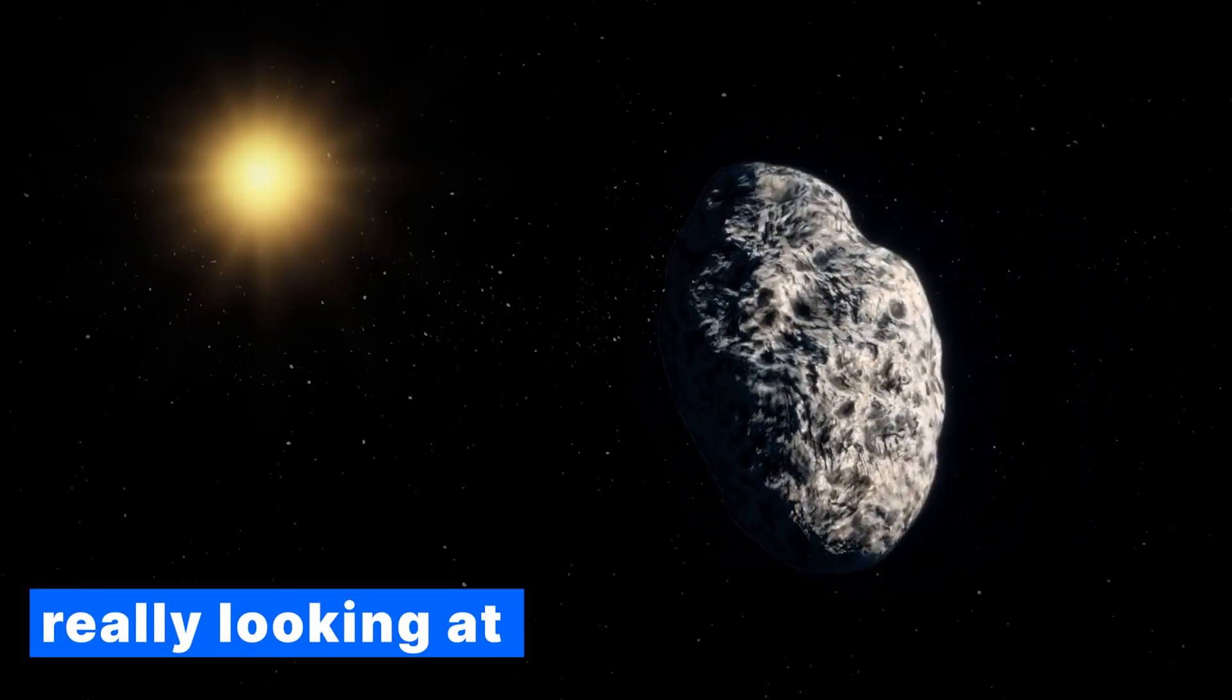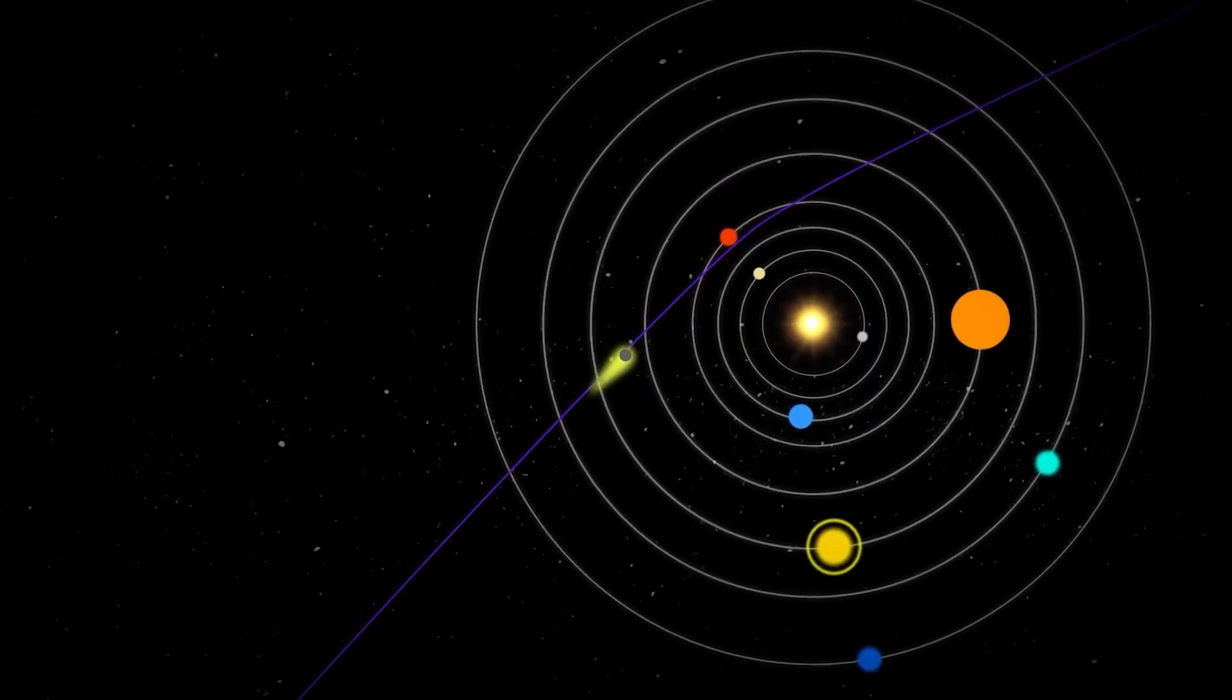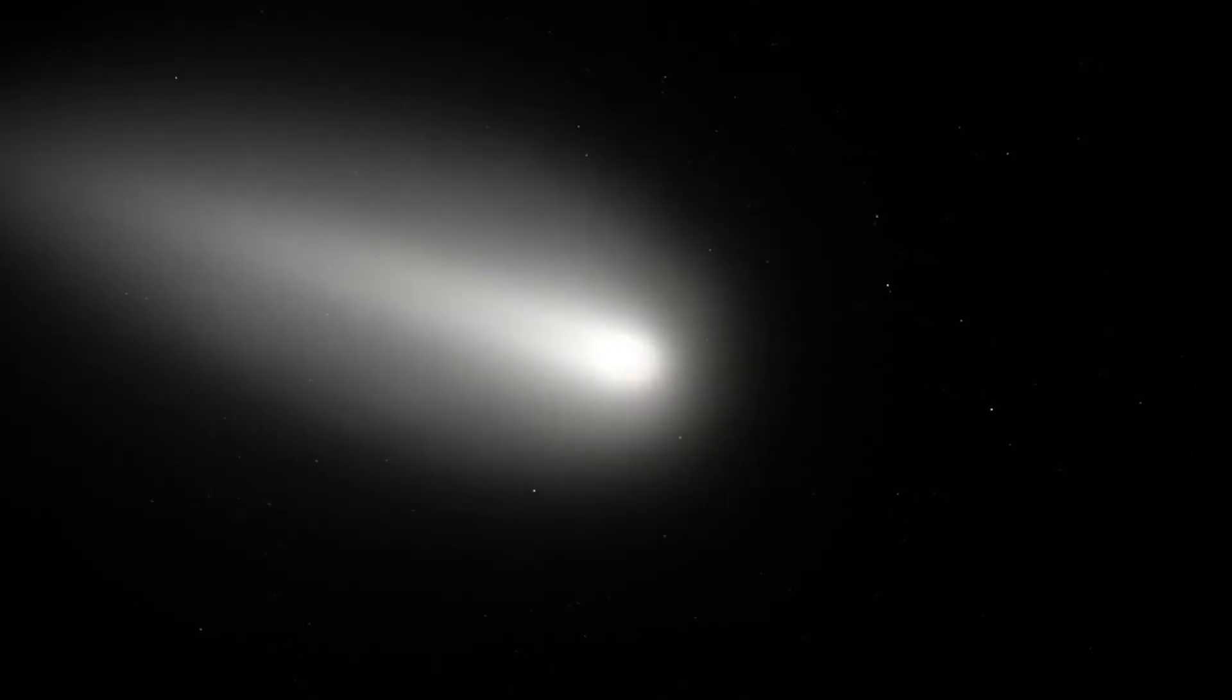Let me lay out what we're really looking at here. An object moving faster than the previous two interstellar visitors, despite being more massive than both combined. Light polarization that's never been seen in any natural object. It brightened faster than any comet ever observed, and was bluer than the sun.